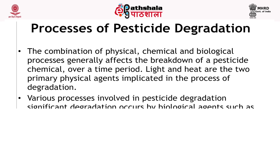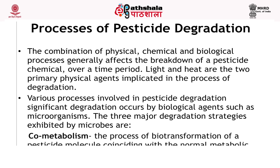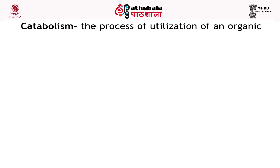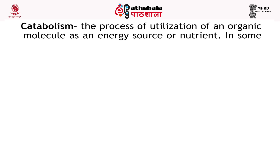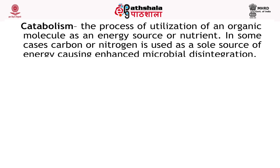Significant degradation occurs by biological agents such as microorganisms, depending on their prevalence in the environment and on the presence of pesticide concentration in the media. The three major degradation strategies exhibited by microbes are: co-metabolism, the process of biotransformation of pesticide molecules coinciding with the normal metabolic function of the microbial process of life, that is growth, reproduction and dispersal. Next is catabolism: the process of utilization of an organic molecule as an energy source or nutrient — in some cases carbon or nitrogen — used as a sole source of energy, causing enhanced microbial disintegration.